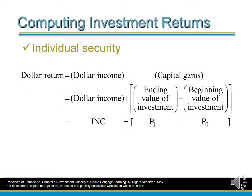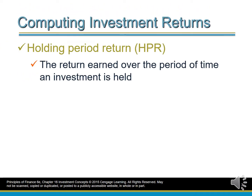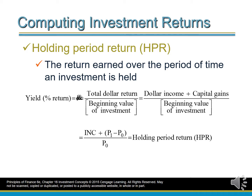Computing Investment Returns. For an individual security, the dollar return is the dollar income plus capital gains. Capital gains is the ending value of the investment minus the beginning value of the investment. The holding period return is the return earned over the period of time an investment is held.